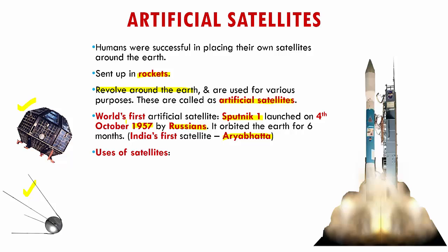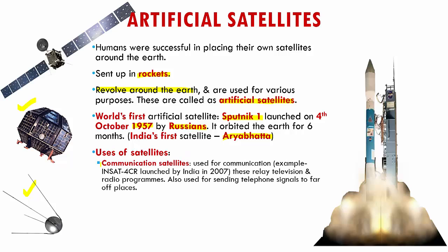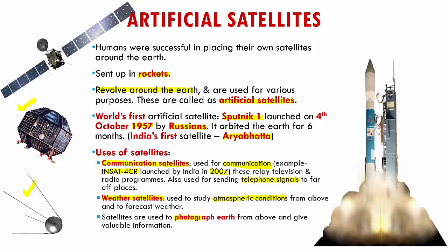Now let's see the uses of satellites. There are communication satellites, used for communication as their name suggests — for example, INSAT-4CR, launched by India in 2007. These communication satellites help in relaying television and radio programs, and are also used in sending telephone signals for very far-off places, like satellite phones. We also have weather satellites, which are used to study atmospheric conditions and help in forecasting the weather. Satellites are also used to photograph the earth from above, giving us valuable information about changes on the earth's surface, and to study the different stars and planets around the earth.